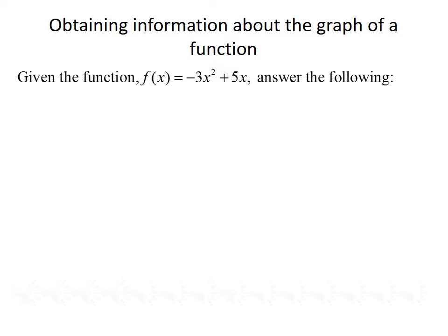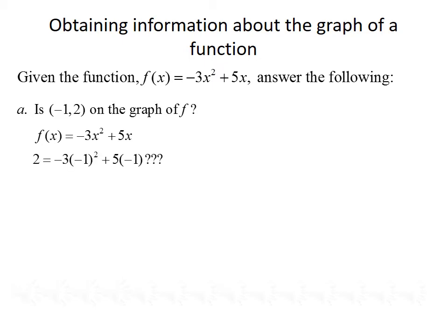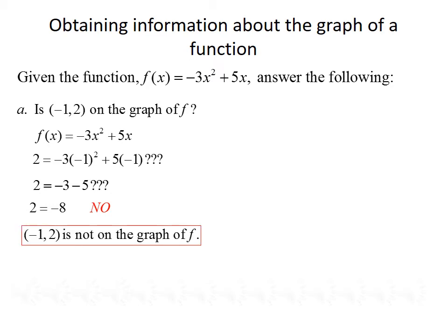Now we want to obtain information about the graph of a function given its equation. Given f(x) equals negative 3x squared plus 5x, first we ask: is the point (−1, 2) on the graph of f? If it is, plugging in negative 1 for x and 2 for f(x) should give a true statement. This gives us 2 equals negative 3 times (−1) squared plus 5 times (−1), which simplifies to 2 equals negative 3 minus 5, or 2 equals negative 8. This is not true, so the point (−1, 2) is not on the graph of f.